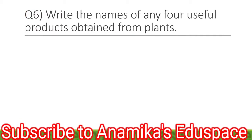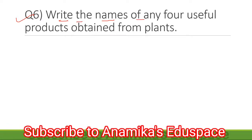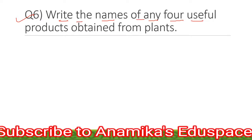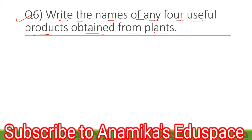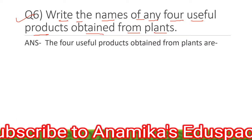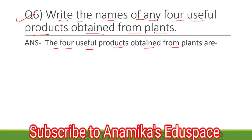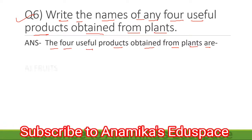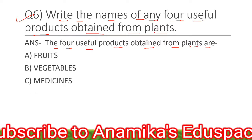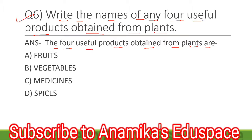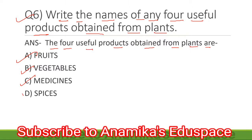Coming to question number 6: Write the names of any four useful products obtained from plants. The answer goes as the four useful products obtained from plants are: fruits, vegetables, medicines, and spices.